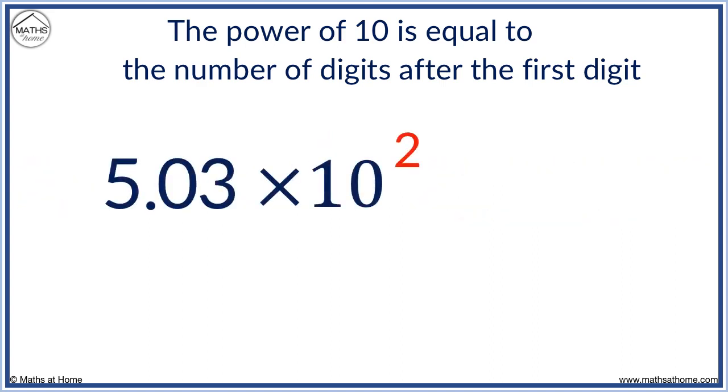Here is 5.03 times 10 to the power of 2. We write the first digit of 5, followed by 2 places. We have a 0 and then a 3. We are out of spaces, so no more zeros are needed. 5.03 times 10 to the power of 2 equals 503.